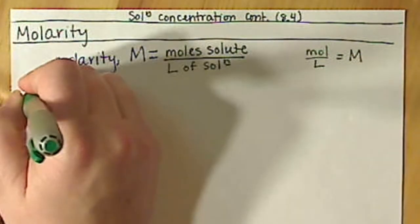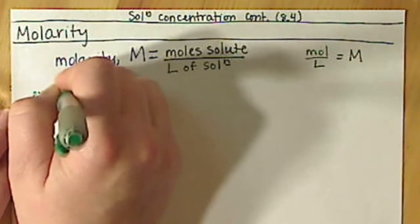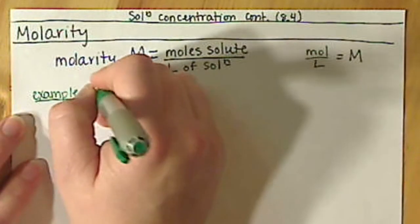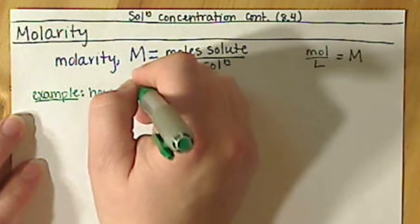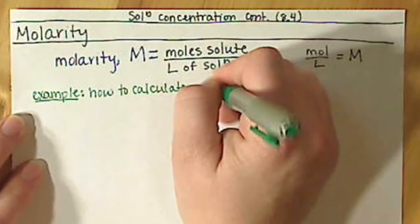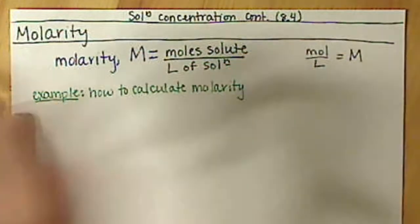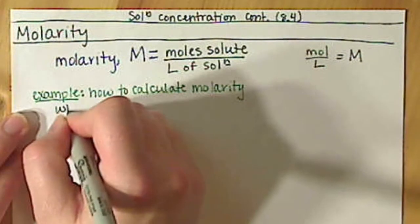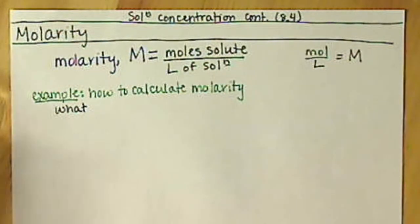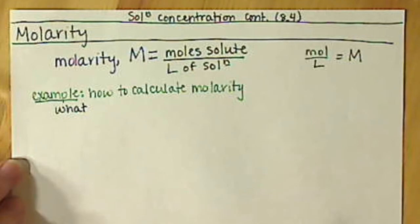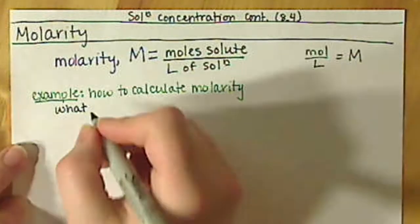If we're looking at an example of how to use or calculate molarity, we can answer questions such as: what is the molarity of 21 grams of HCl in 850 milliliters of solution?